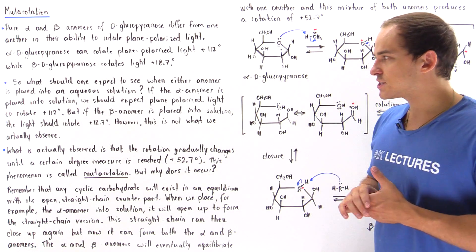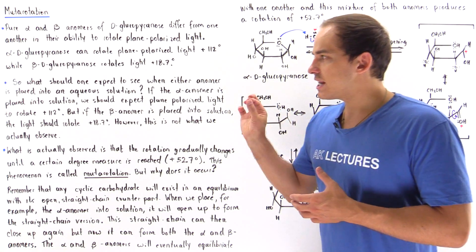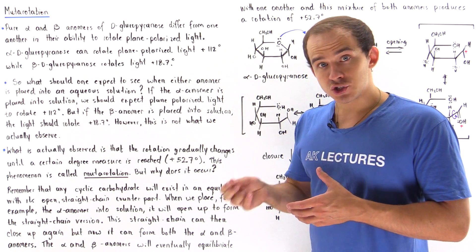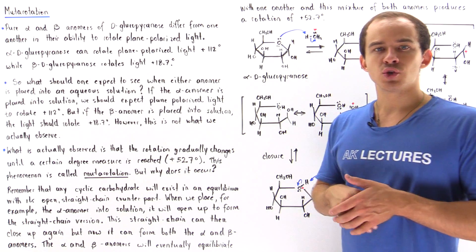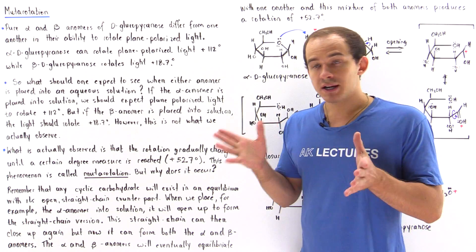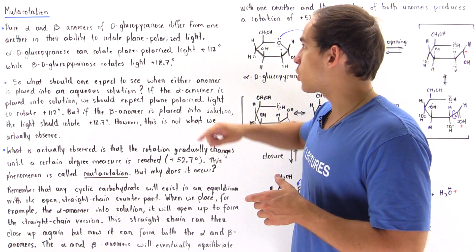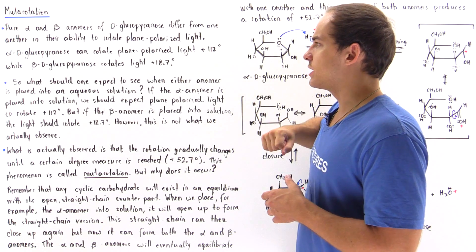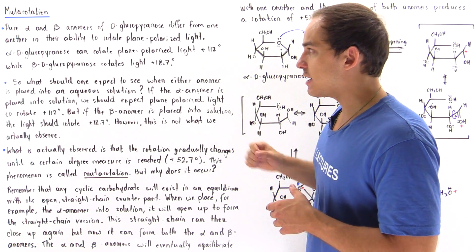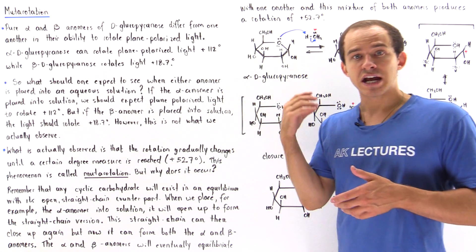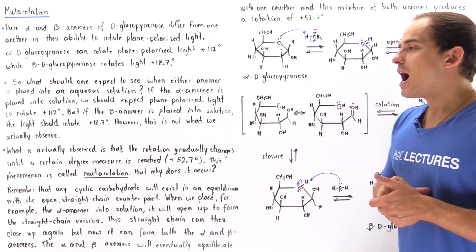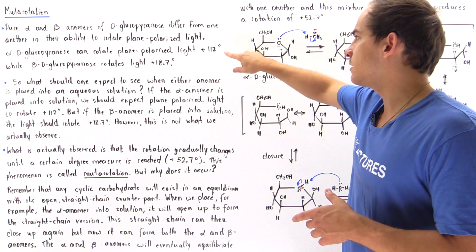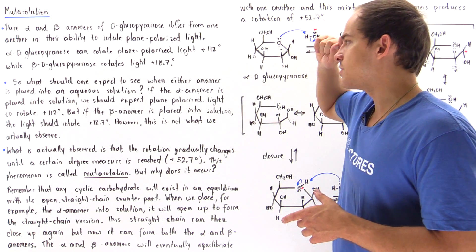We might expect that if only the alpha anomer is initially placed into our aqueous solution — because alpha rotates at positive 112 degrees — the plane polarized light we shine on that aqueous mixture will be rotated exactly that degree measure.